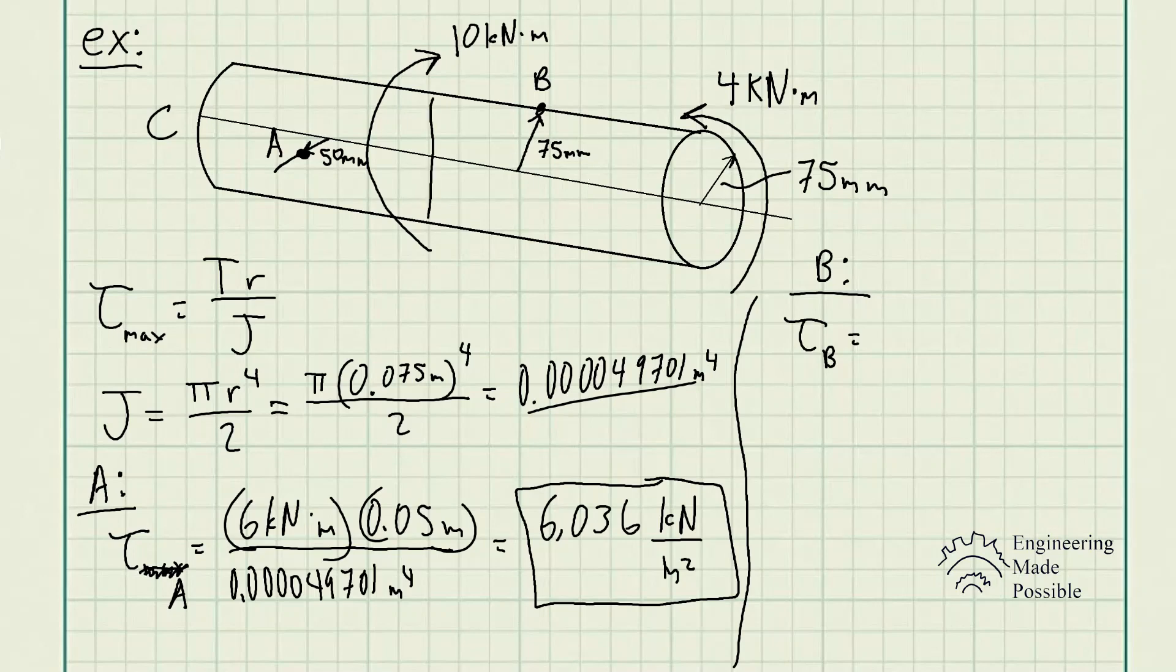Now, point B might be a little bit tricky to solve. You could always look at what exactly would be your reactive torque, your torque that cancels, that would put this shaft in equilibrium, right? The 10 kilonewtons going clockwise, 4 kilonewtons going counterclockwise. What would be this reaction torque at the fixed end such that it's in static equilibrium here?